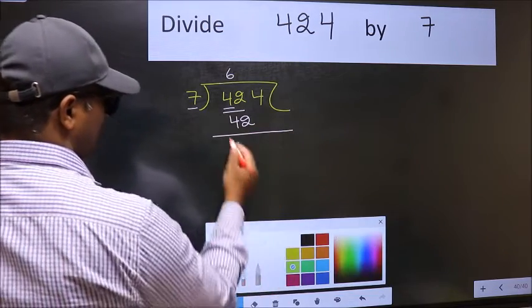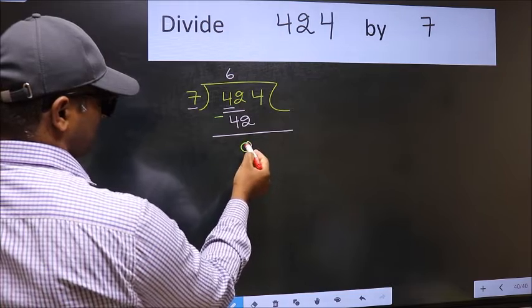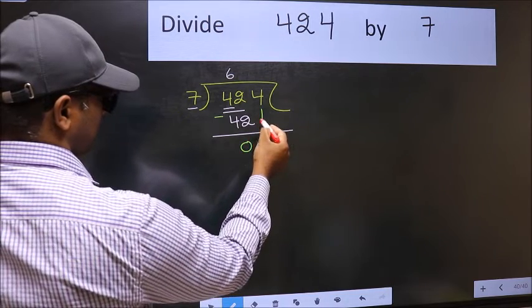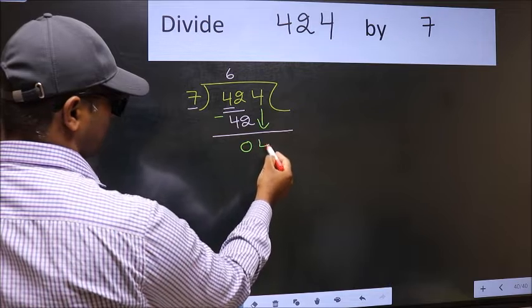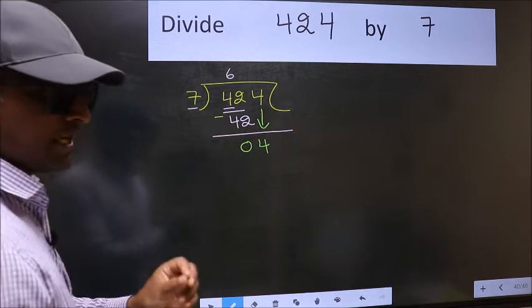Now you should subtract. 42 minus 42 equals 0. After this, bring down the number beside it, so bring 4 down. After this step, the mistake happens.